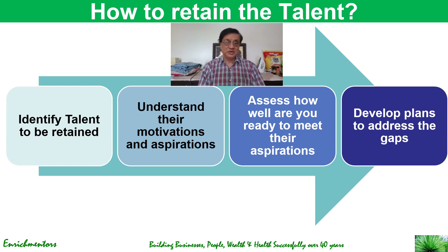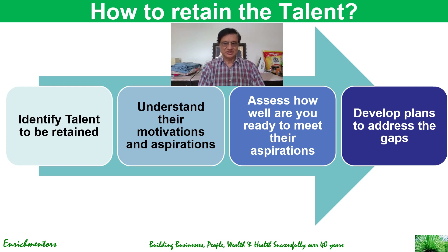Second, having identified that talent, you need to understand their aspirations and motivations — what they want to achieve in life and what will motivate them — while also identifying what skills and knowledge you need to develop in them for the future. Third, assess how ready your organization is to meet their aspirations, in terms of organizational readiness. Talented people often have out-of-the-ordinary requirements, so you may need to bend or create new rules to motivate them and meet their aspirations.